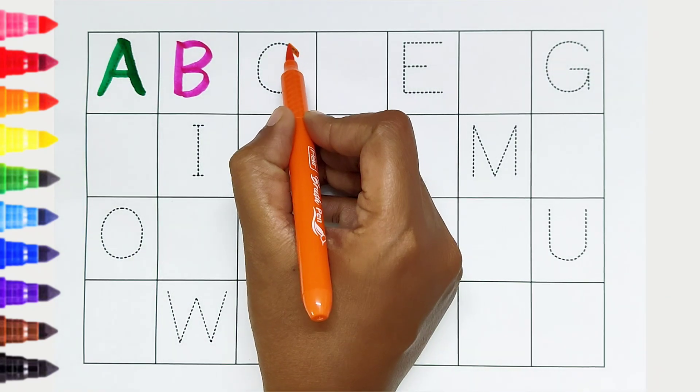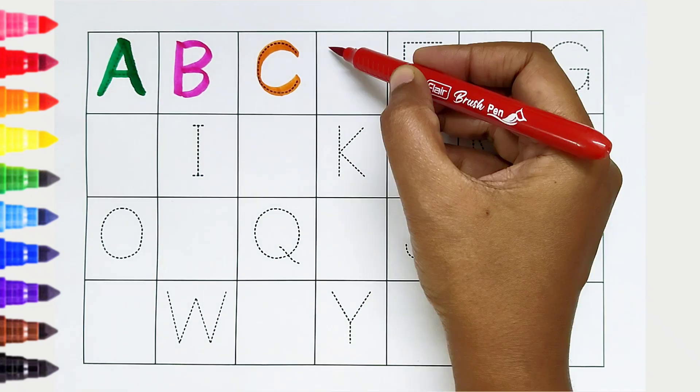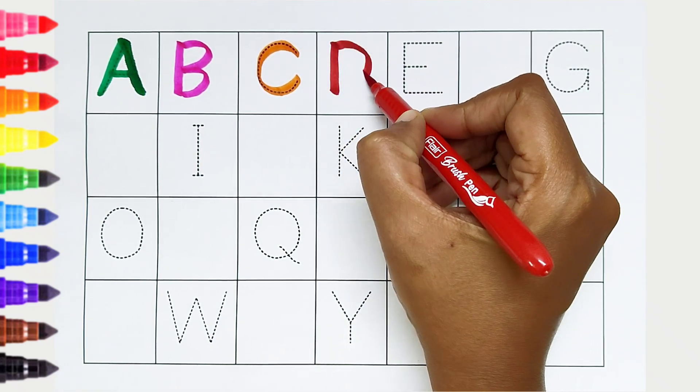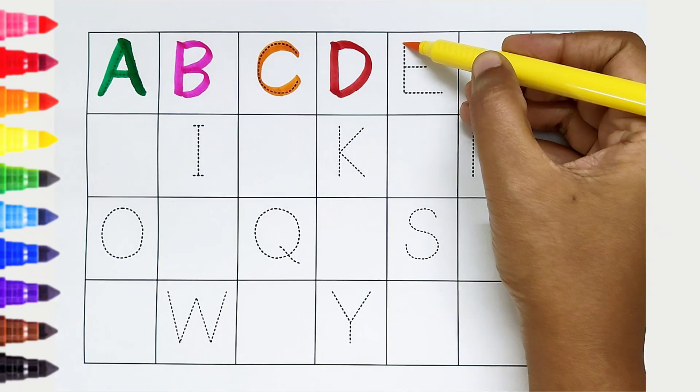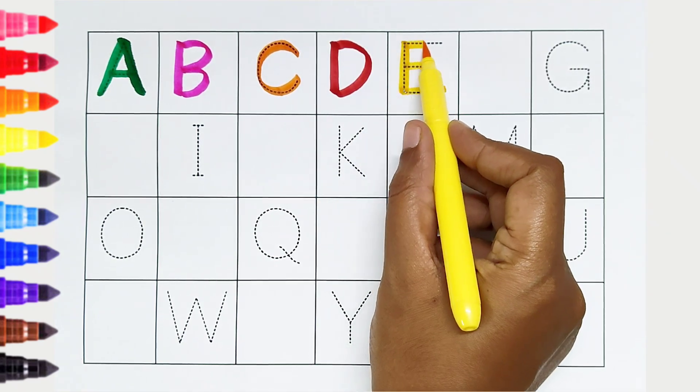C. Orange color, C is for cat. D. Red color, D is for donkey. E. Yellow color, E is for eagle.